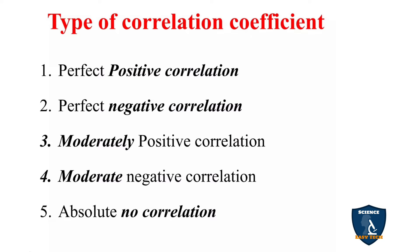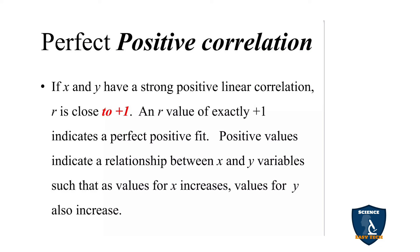Moderately negative correlation ranges from minus 0.6 to minus 0.4. Weak negative correlation ranges from minus 0.3 to minus 0.1. Perfect positive correlation means if one variable increases, the other also increases — for example, height increases and weight also increases.